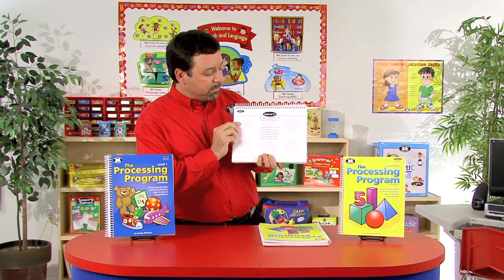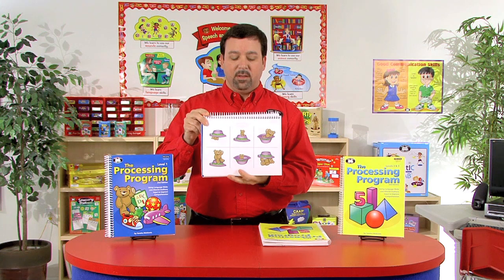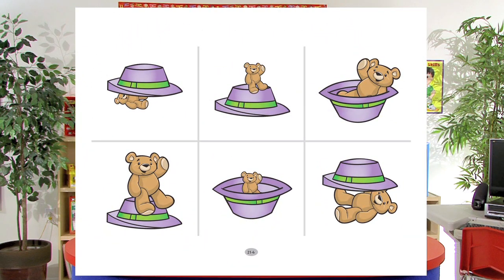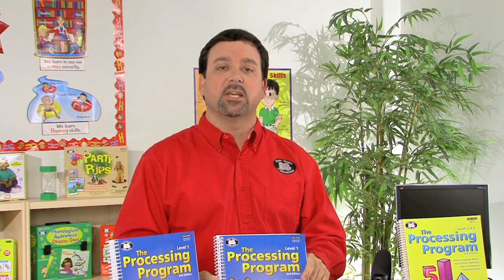Here's sublevel 21, where we work with size plus noun and preposition plus noun. The example is "touch the little bear under a hat." Prompts include: touch the little bear under a hat; touch the big bear in a hat; touch the little bear in a hat; touch the big bear under a hat. This adds different elements to the auditory processing activity. So in Level 1, instructions start simple and get more complex as we increase sublevels.